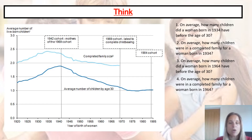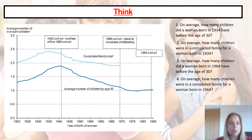Question number one: on average, how many children did a woman born in 1934 have before the age of 30? You'll see there are two different coloured blue lines. The darker blue one is children before the age of 30, and the light blue one is at the end of having all of their children. So if we look at 1934 — just slightly before 1935 on the graph — we can see a figure of about 1.8 children born before the age of 30.